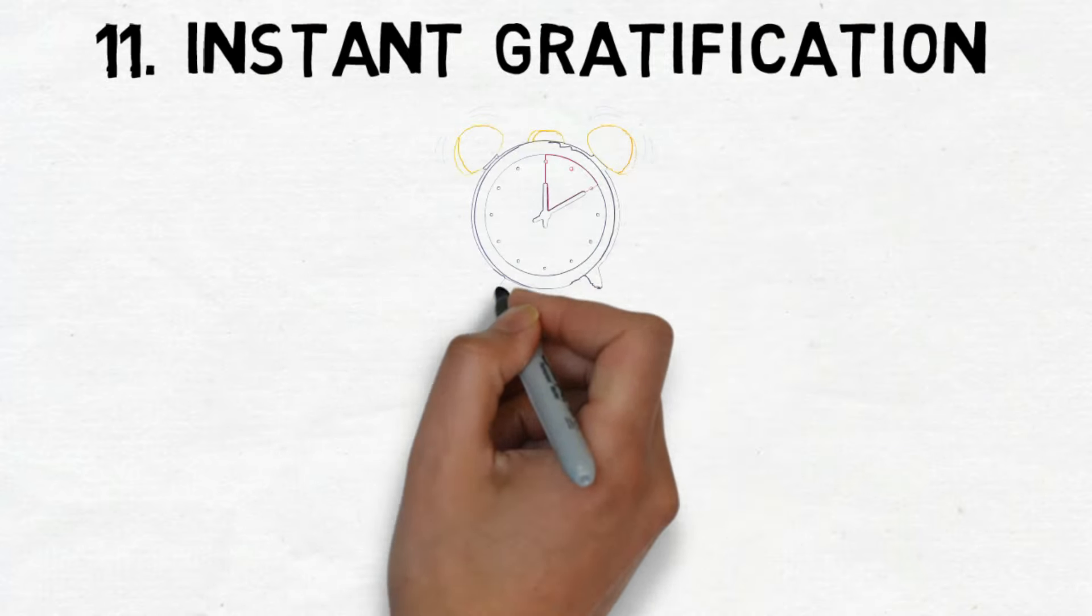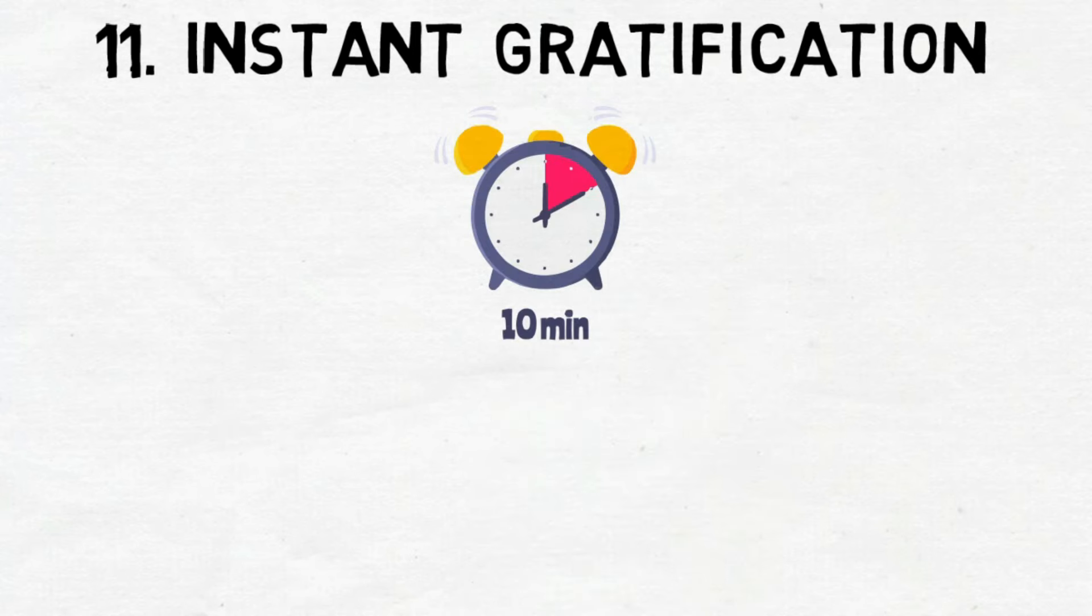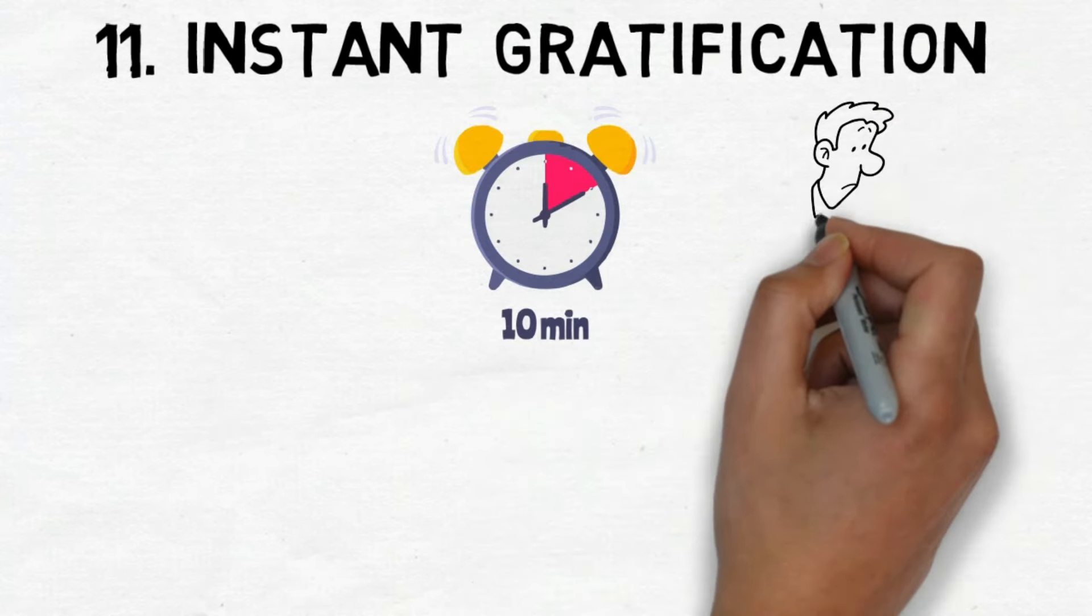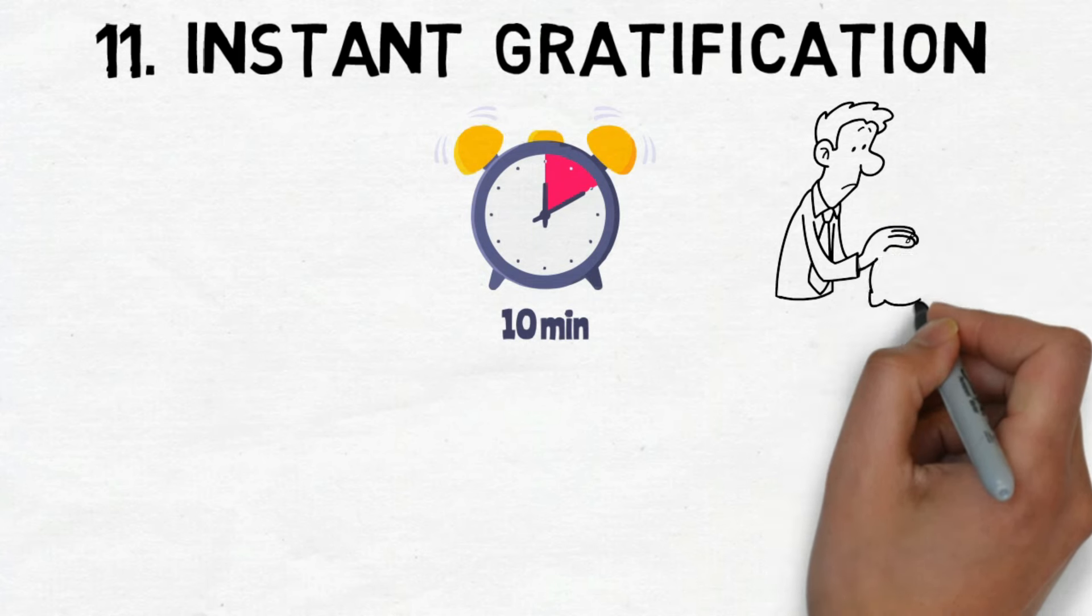Number 11. Instant Gratification. This concept is all about always wanting quick results from everything we do. While there may be valid reasons for this approach, such as urgent financial needs, it often leads to prolonged financial struggles for many individuals.